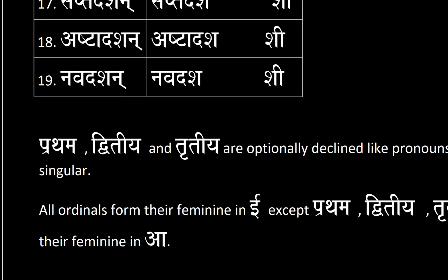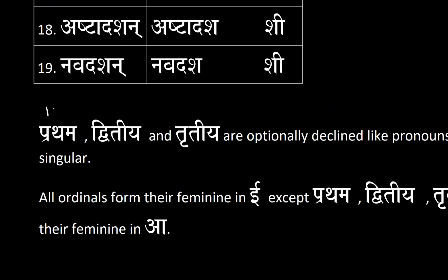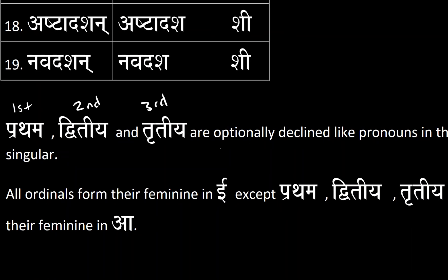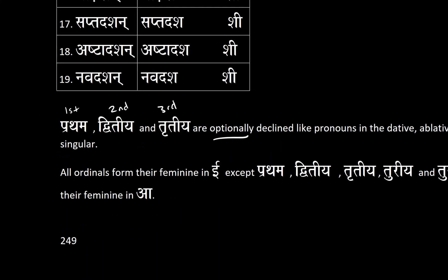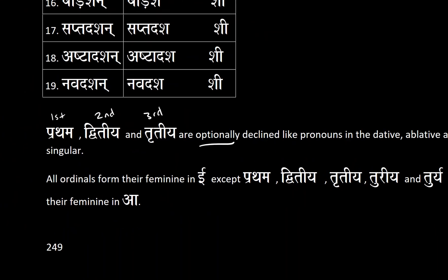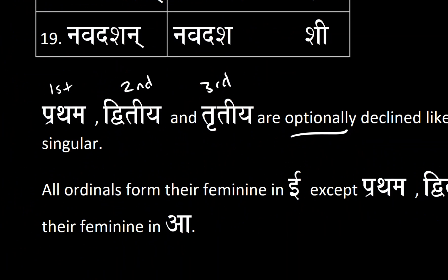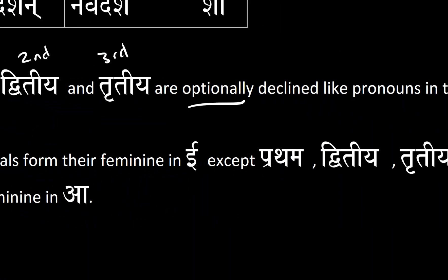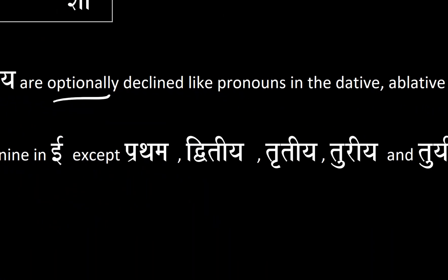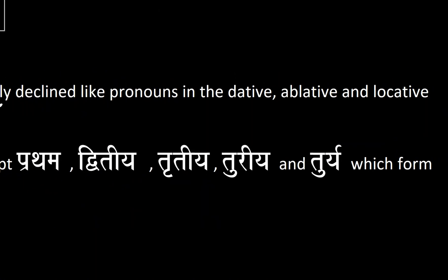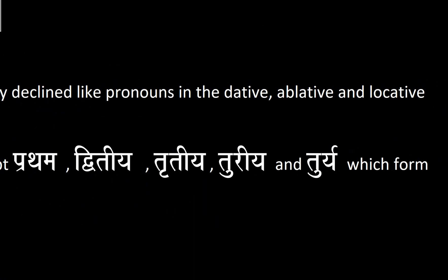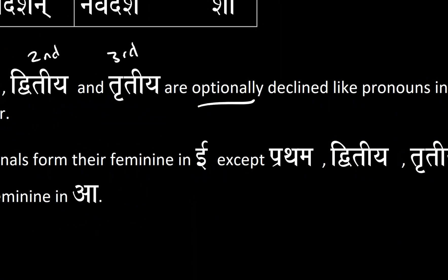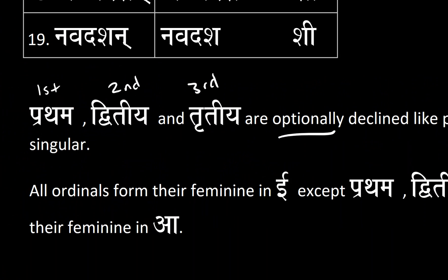The words Prathama, Dvitiya, and Tritiya — that is first, second, and third — are optionally declined like pronouns in the dative, ablative, and locative singular. All ordinals form their feminine in long 'e' except for Prathama, Dvitiya, Tritiya, Turiya, and Turiya, which form their feminine in long 'a'.